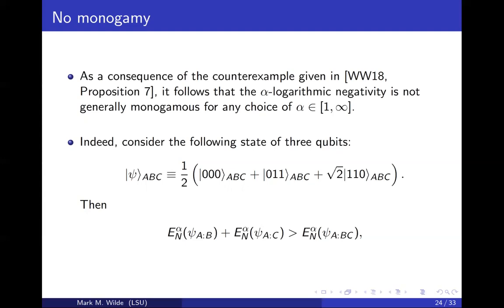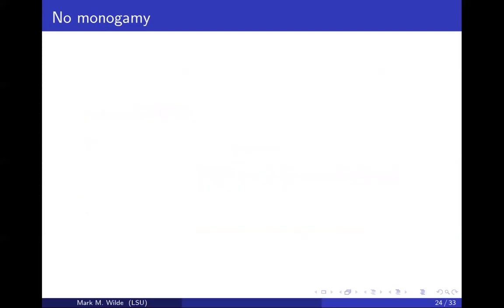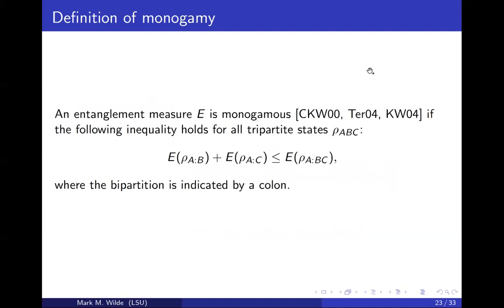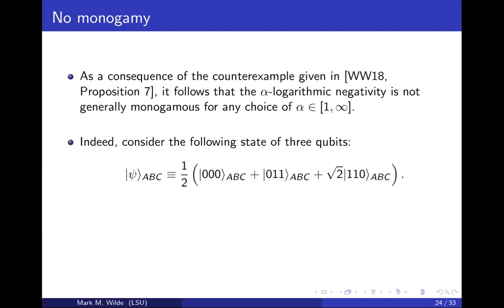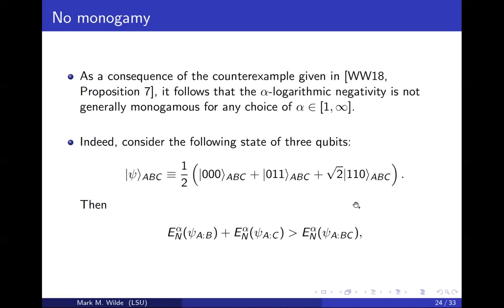Monogamy calls into question whether this is a necessary property. It was some intuition that Barbara Terhal had and formulated in 2004, and it became an important property people considered in the context of entanglement theory. But this tells us it's not really absolutely necessary — it's just an interesting property. If we consider the state of three qubits with Alice having one, Bob one, and Charlie another, you can show that monogamy is violated for logarithmic negativity, for kappa entanglement or max logarithmic negativity, and for all the alphas.